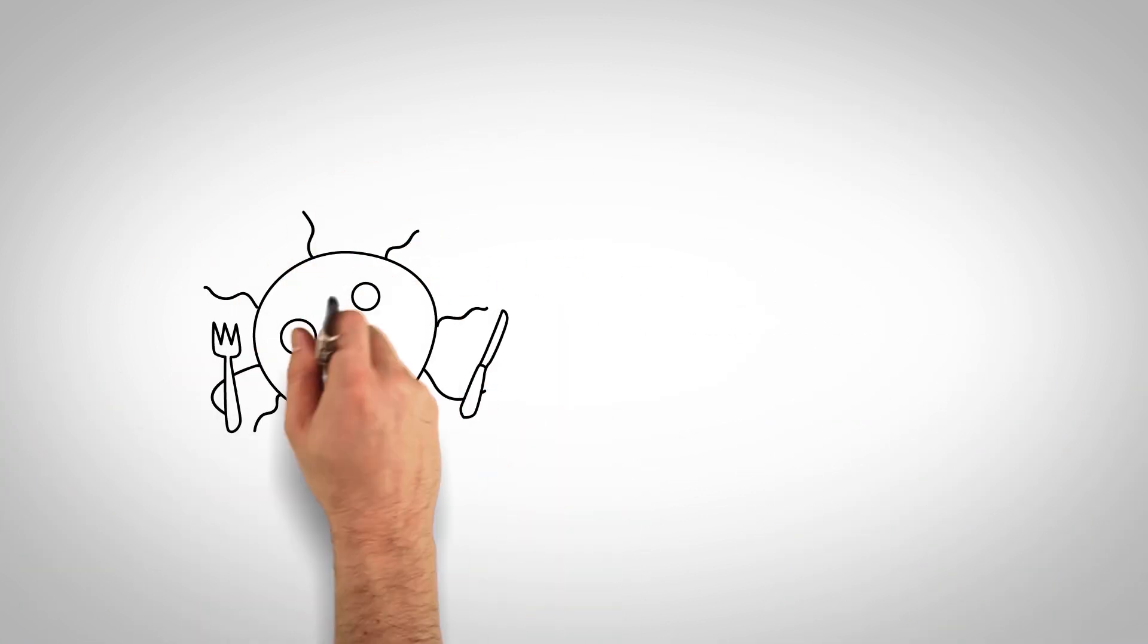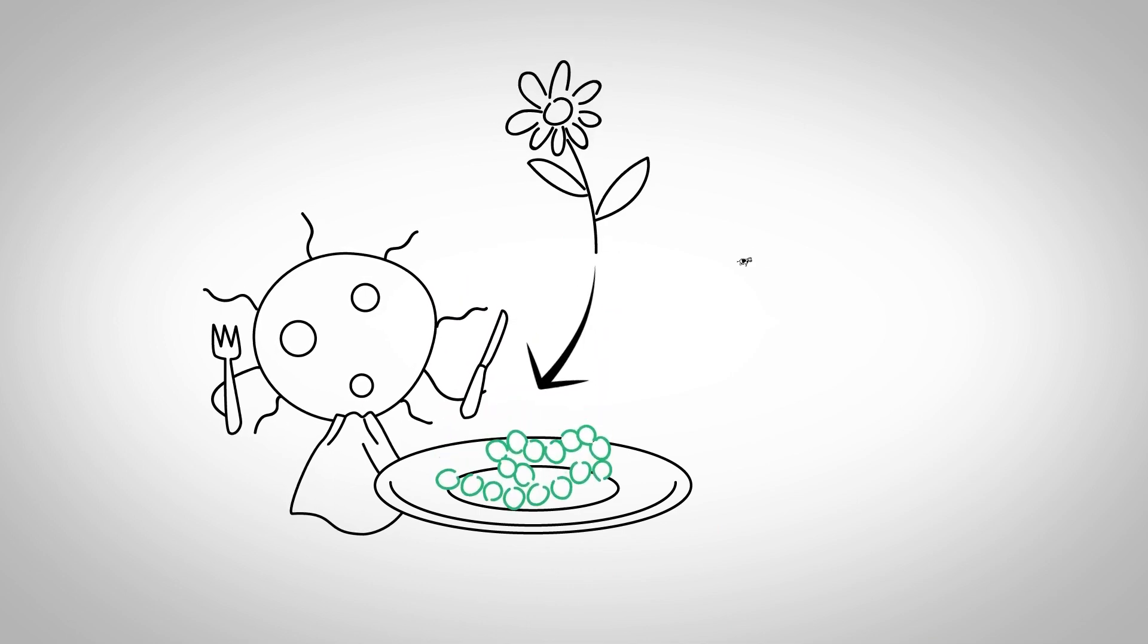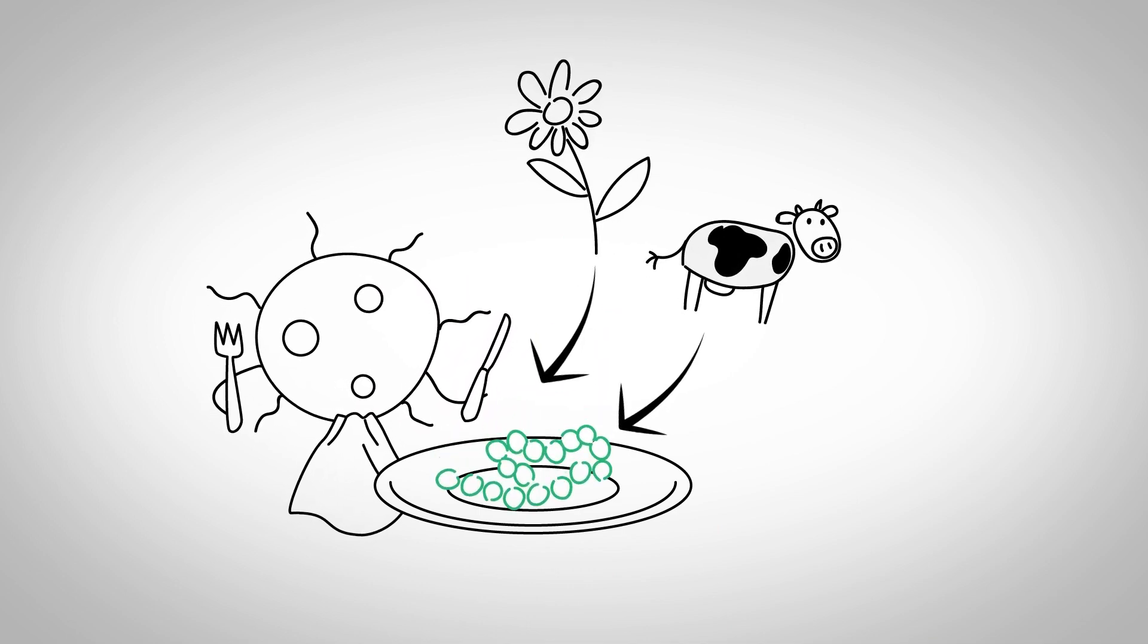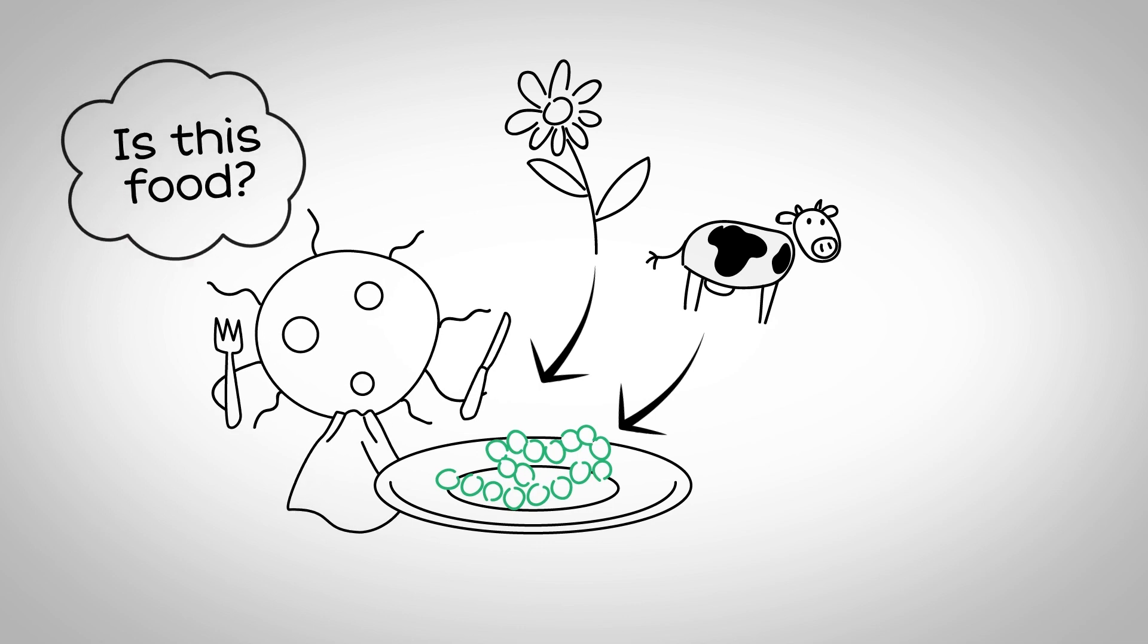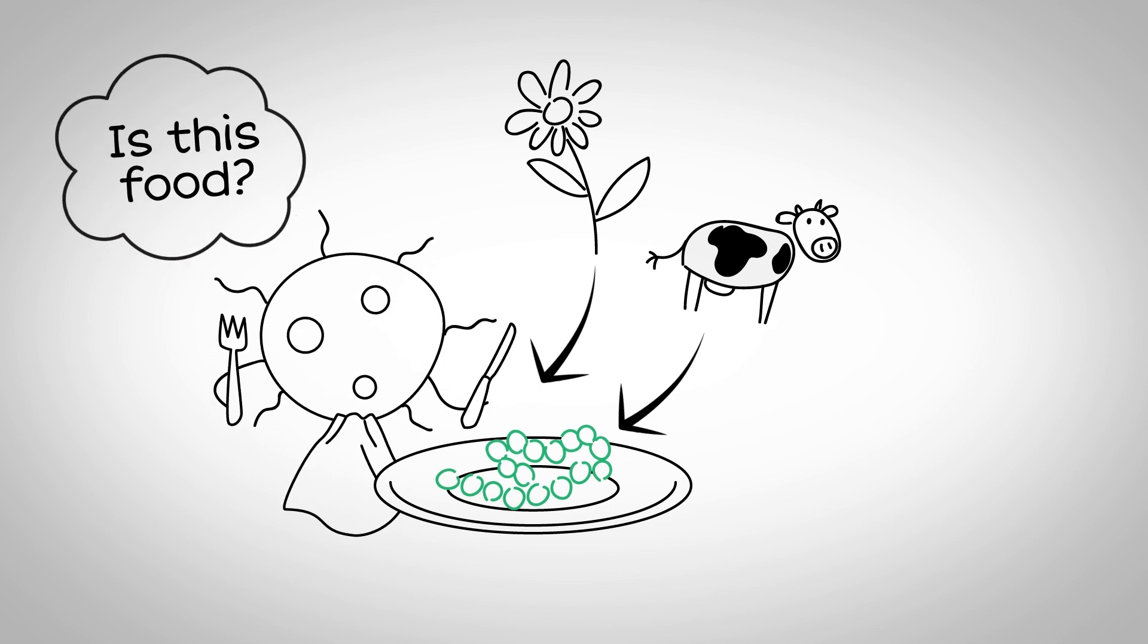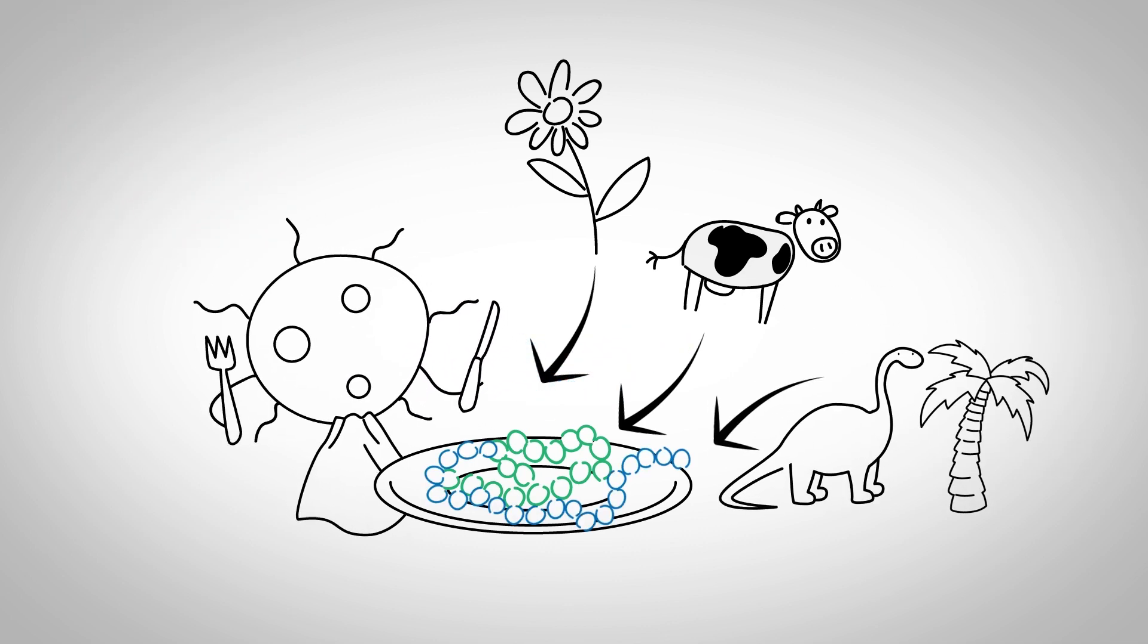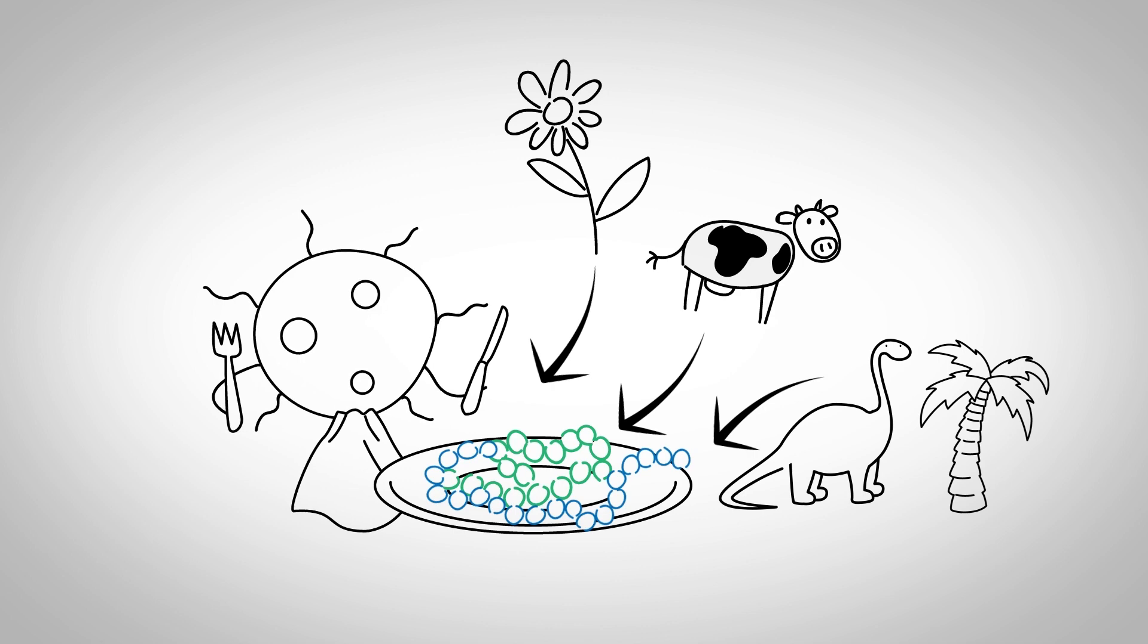It is often assumed that microbes will only eat biobased materials, derived from new plants and animals. But the term biobased pertains only to the origin of the material from renewable sources, before it is transformed into a product. Old plants and animals, or fossil-based sources, can also be used to create high-value products suitable for microbe consumption.